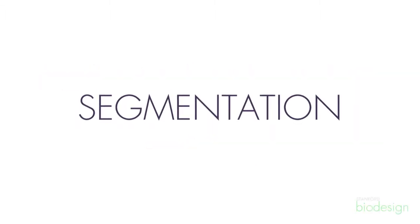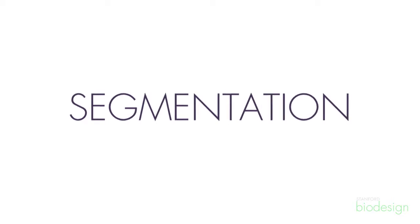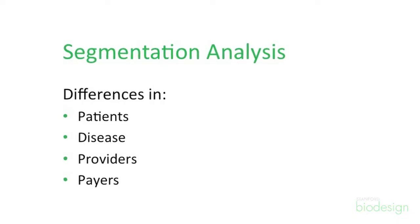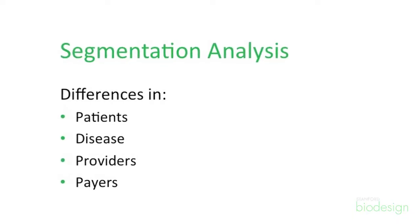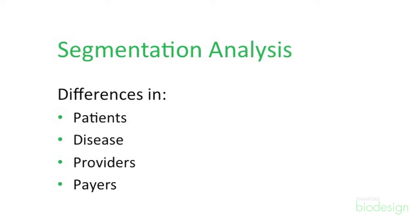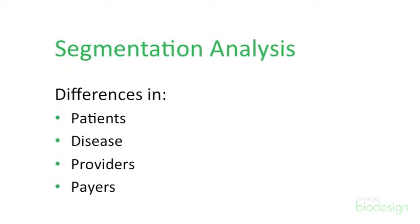From everything you've learned so far, you might realize there are subtleties in the types of patients you want to treat, the disease that they have, and also in the people that are providing them with care. That'll lead you to your segmentation analysis. Segmentation analyses can lead people down a rabbit hole, because there are so many different ways you can cut patient populations. I recommend actually talking to the key decision makers in treating the disease, and just asking them what's relevant.